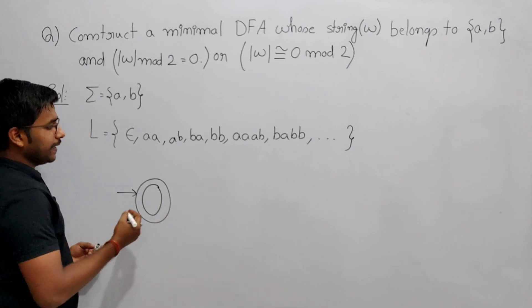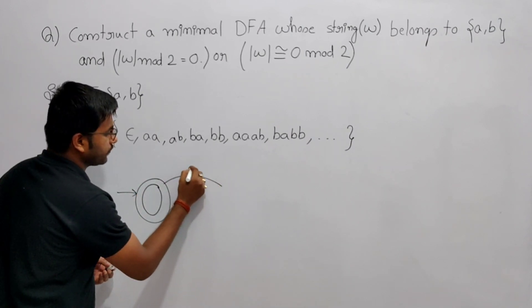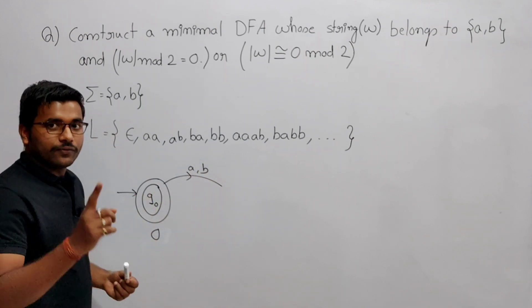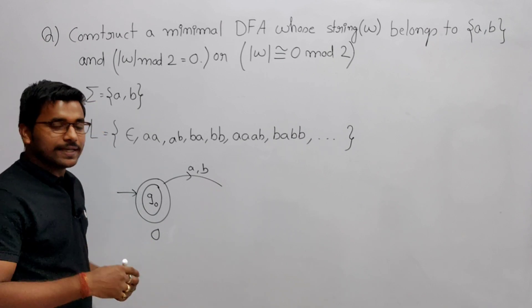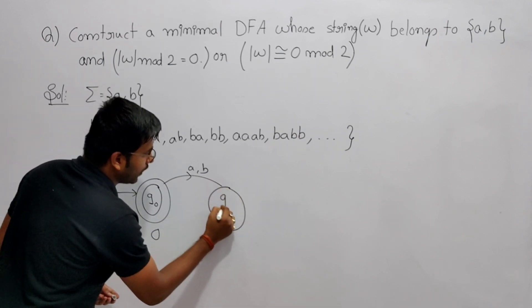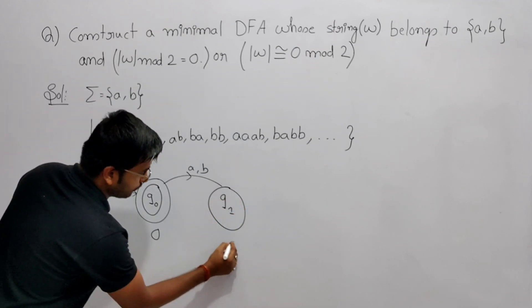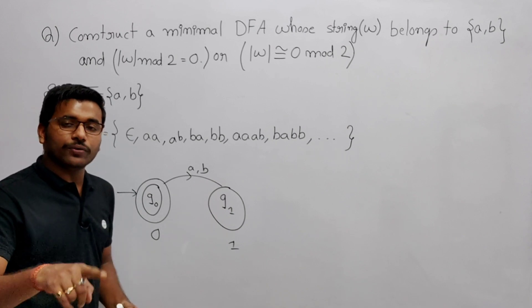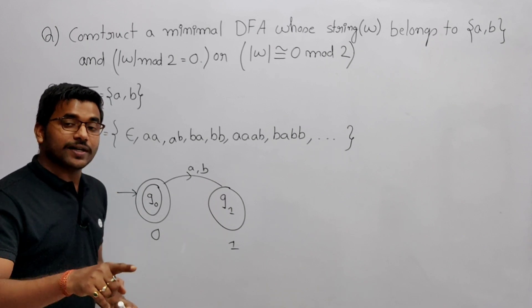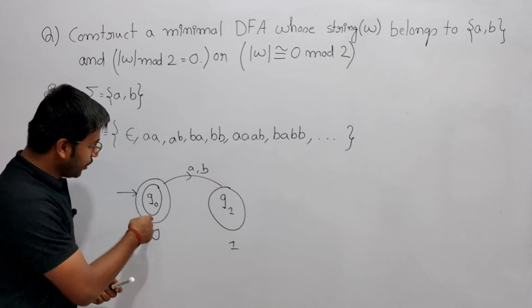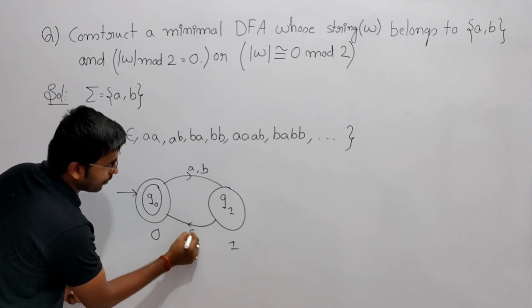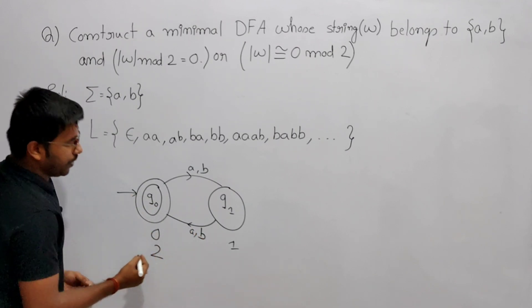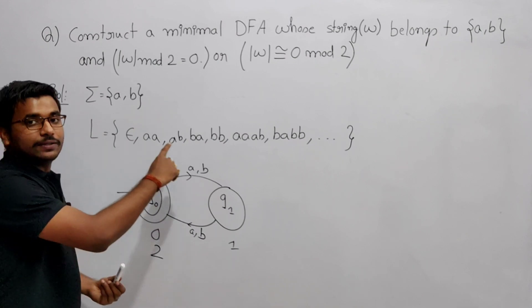Now by getting either 'a' or 'b', the length becomes 1. When you divide 1 by 2 you get remainder 1, so I am indicating state q1. Again from q1, on getting 'a' or 'b', the length becomes 2. When you divide by 2 you get remainder 0, so it goes back to q0. From q0 on 'a' or 'b' length becomes 3, remainder 1, going to q1; then length 4, remainder 0, back to q0.